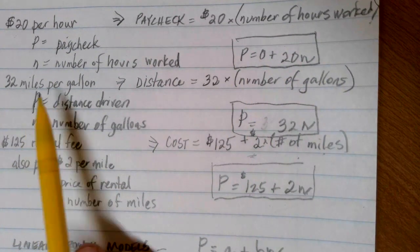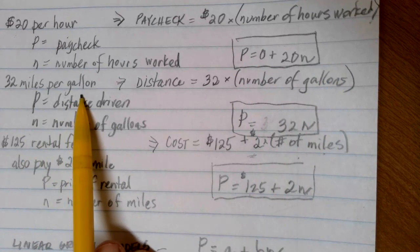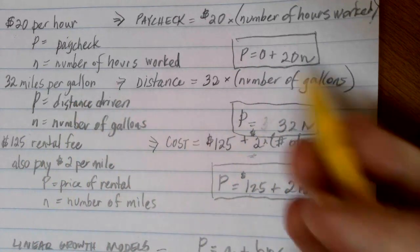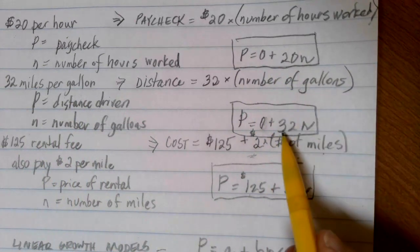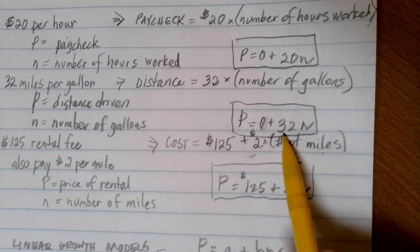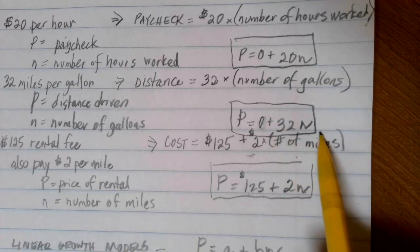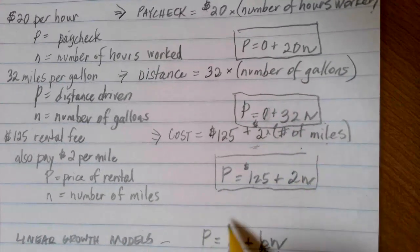Same type of thing here. If we have zero gallons of gas in our car, we're not going anywhere. So here, your fixed value would be zero. And then your rate of change is 32 miles for every one gallon that gets put into our situation.